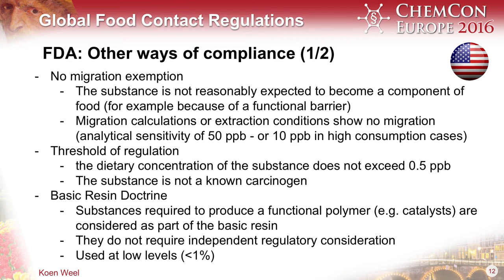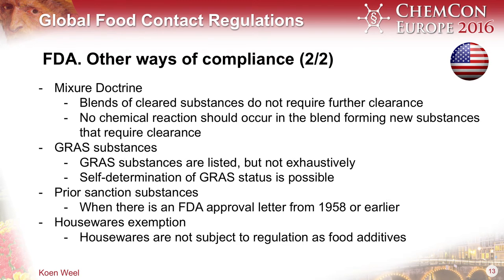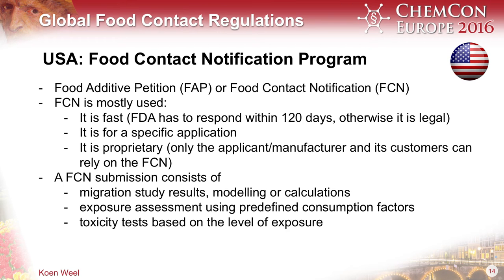In addition to the legal text, there are many other ways to demonstrate compliance to the FDA. First of all, there's the no migration exemption. A bit similar is the threshold of regulation, which refers to exposure — you have to use the exposure factors given by FDA. Further, there is the basic resin doctrine, then the mixture doctrine for mixtures of regulated substances that do not react together, and then there are the GRAS substances — some of them are listed, but not all. Then there are the prior sanctioned substances and the housewares exemption. If you would like to add substances, you can use the food contact notification program — either the food additive petition or the FCN.